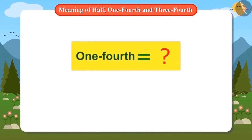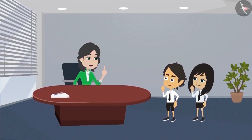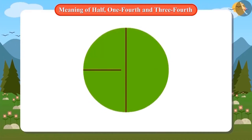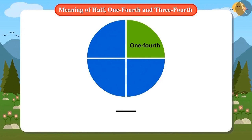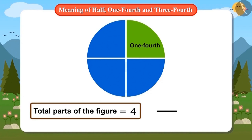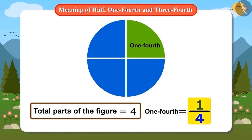And how do we write quarter? Exactly like I have written half, you can also write quarter. Let me try. One out of four equal parts of this figure is called quarter. To write this, we will first draw the line of division and then write the total number of parts of the figure — there are a total of four parts. Therefore, we will write four under the line and one out of these four will be quarter. So we will write one above the line. That means to write a quarter, we have to write one out of four.